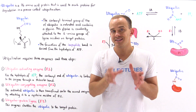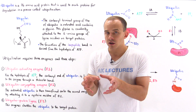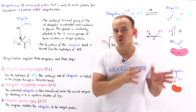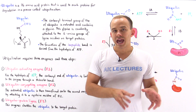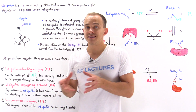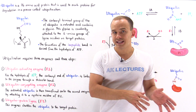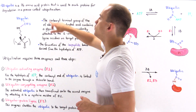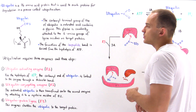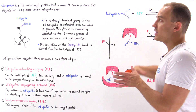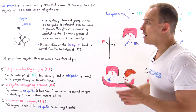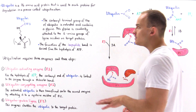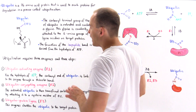Ubiquitin is a marker for proteins that need to be broken down. Before the protein is actually broken down, it undergoes a process known as ubiquitination — that is, we attach many ubiquitin molecules onto that target protein that needs to be broken down.